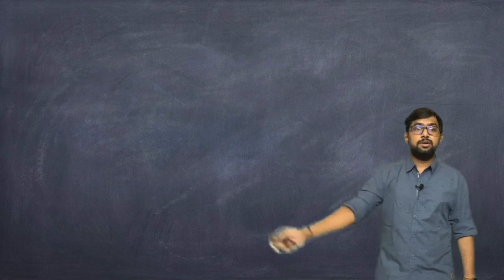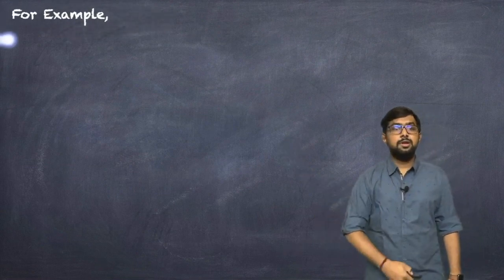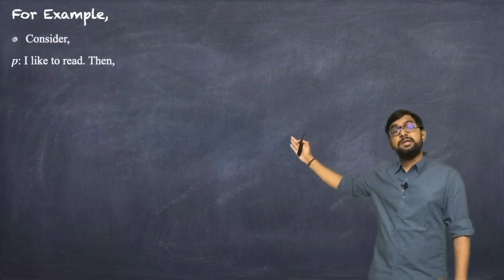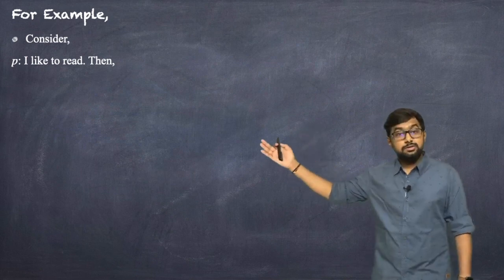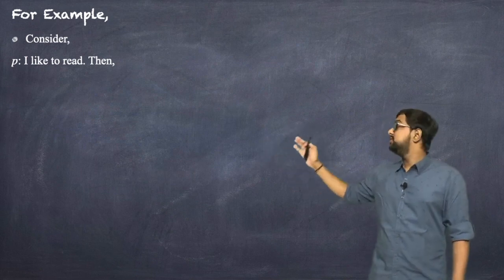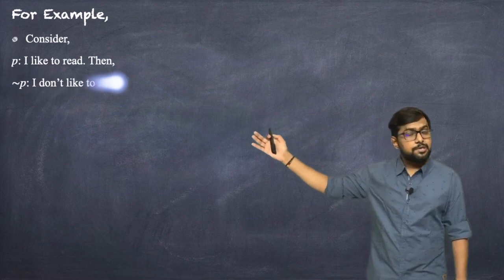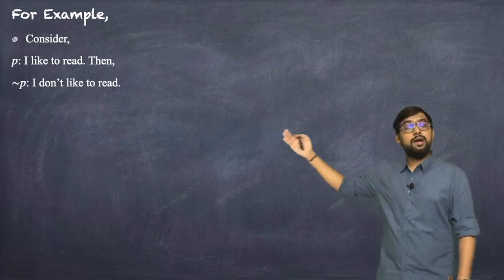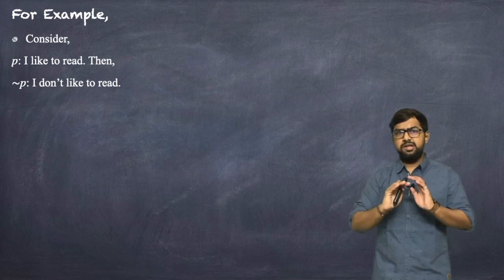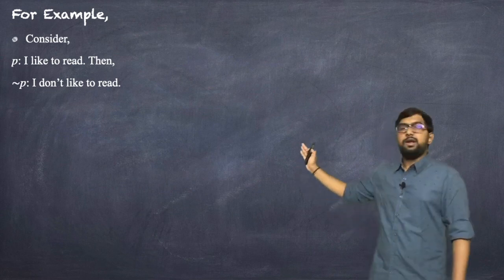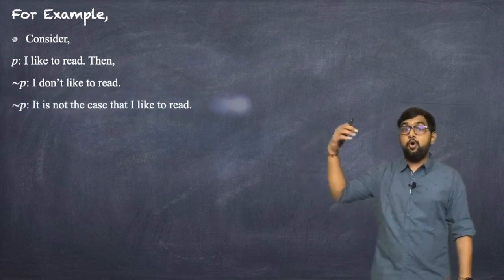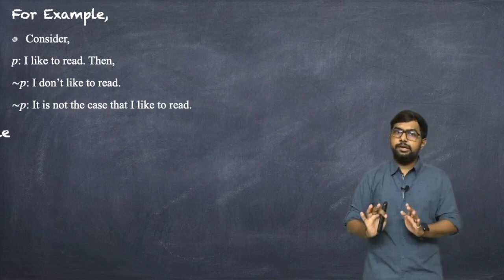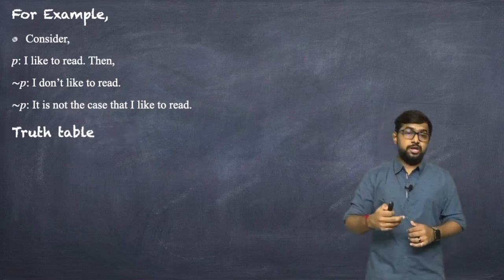For example, consider P equals 'I like to read.' Since it is a unary connective there is only one statement. The negation of P, written as not P, is 'I don't like to read,' or in another way, 'It is not the case that I like to read.'